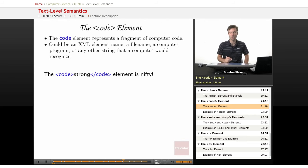So the code element represents a fragment of computer code. It could be an XML element name, a file name, a computer program, or any other string that a computer would recognize. A string just means like if you string together a bunch of characters.